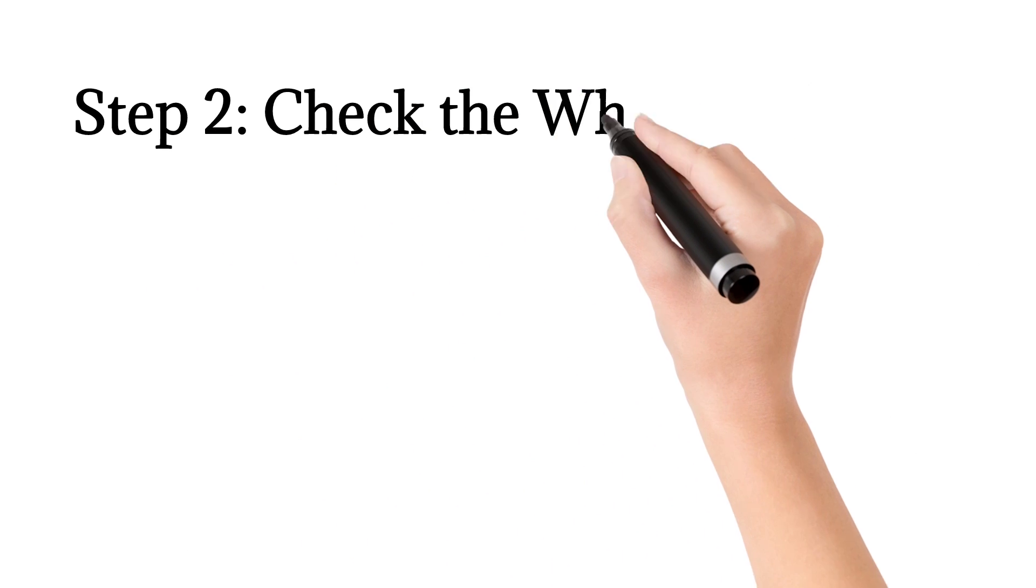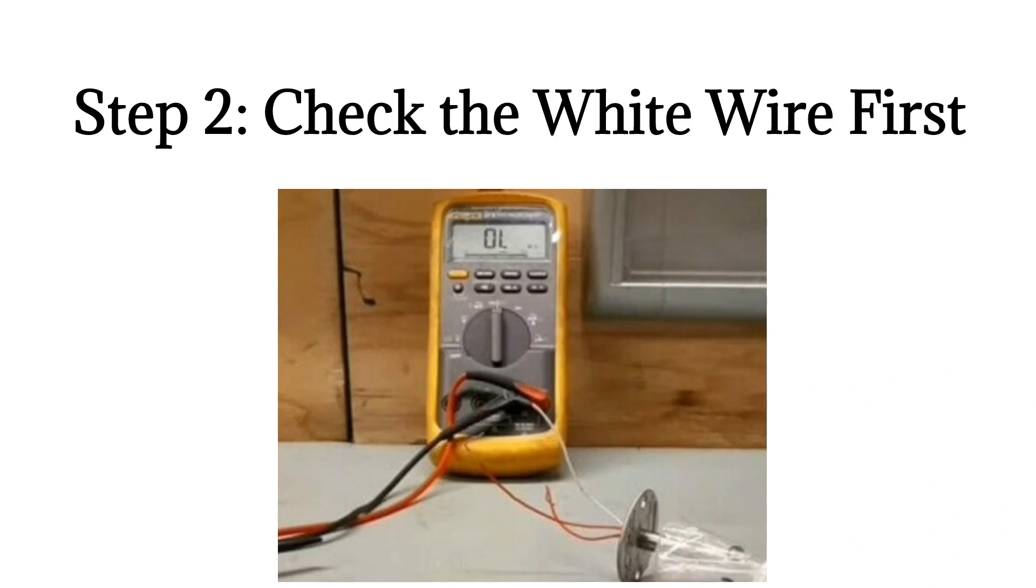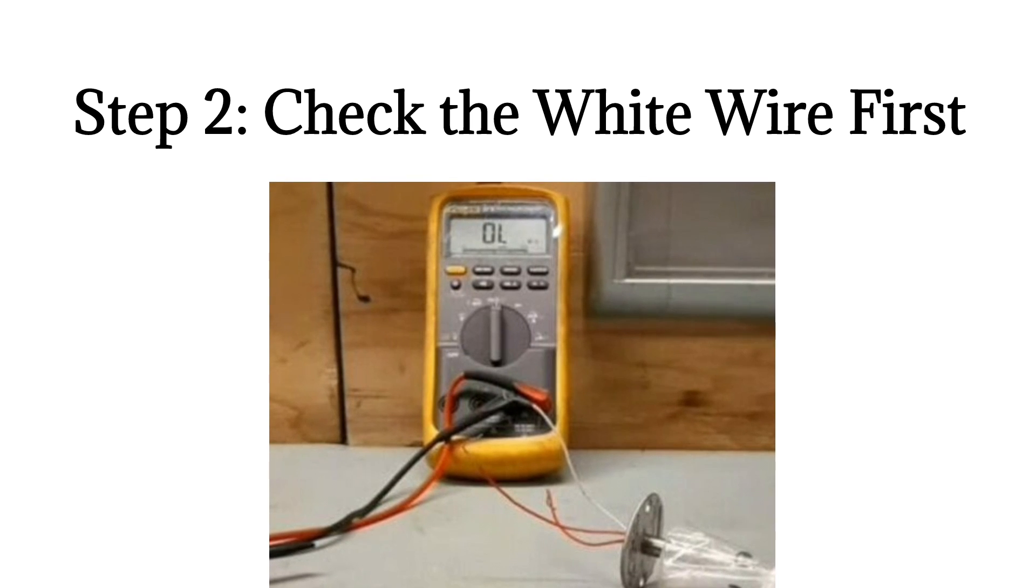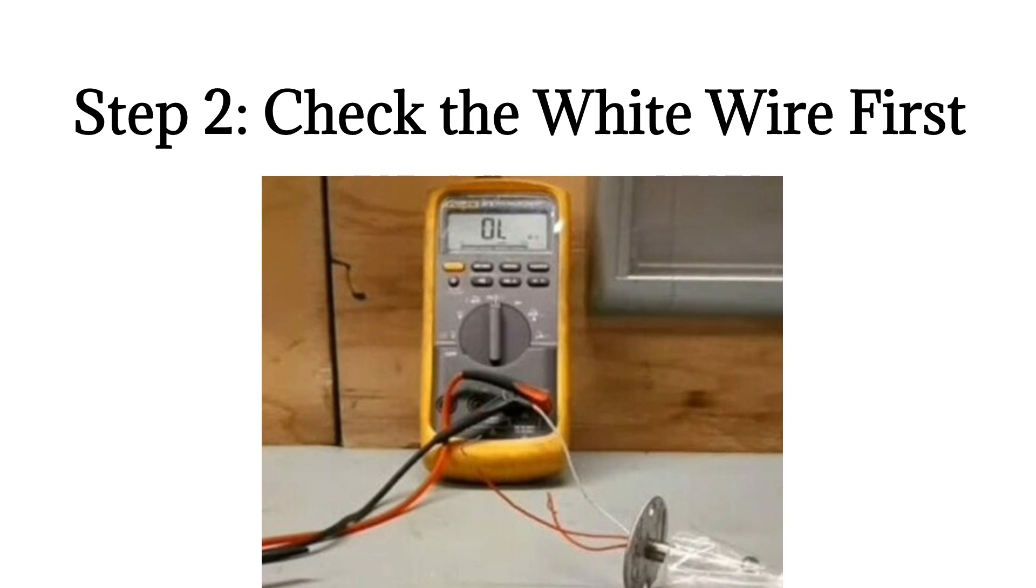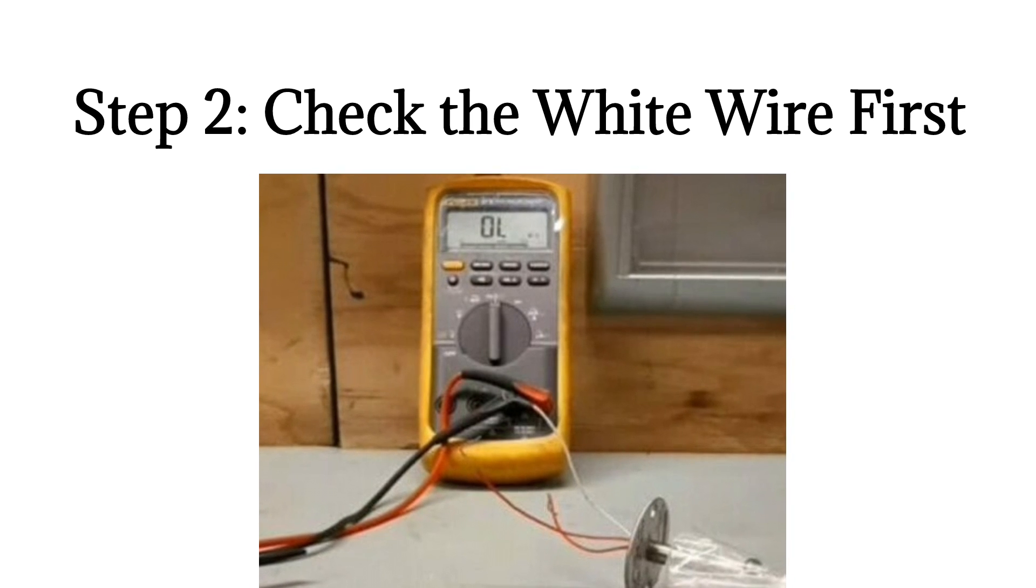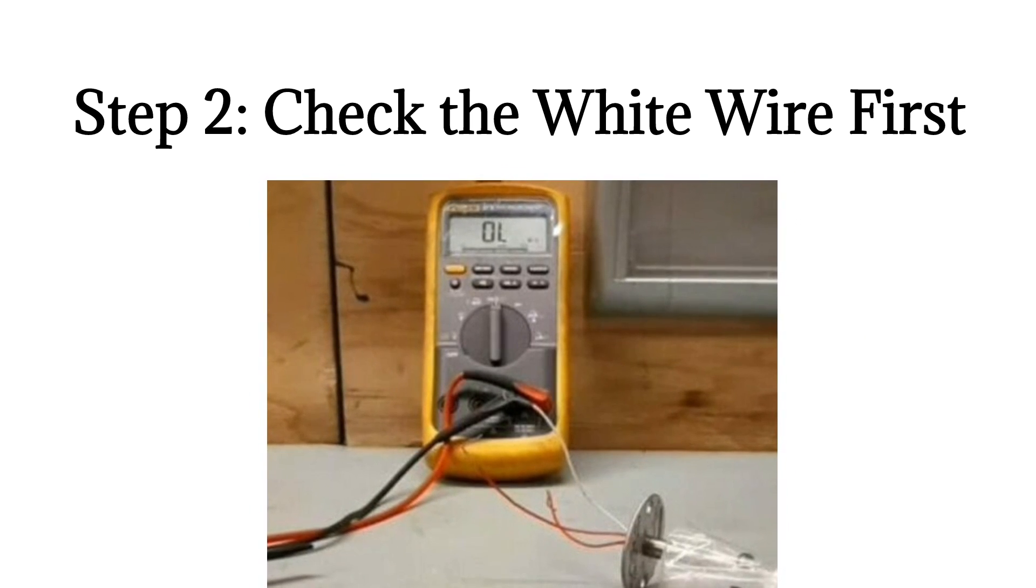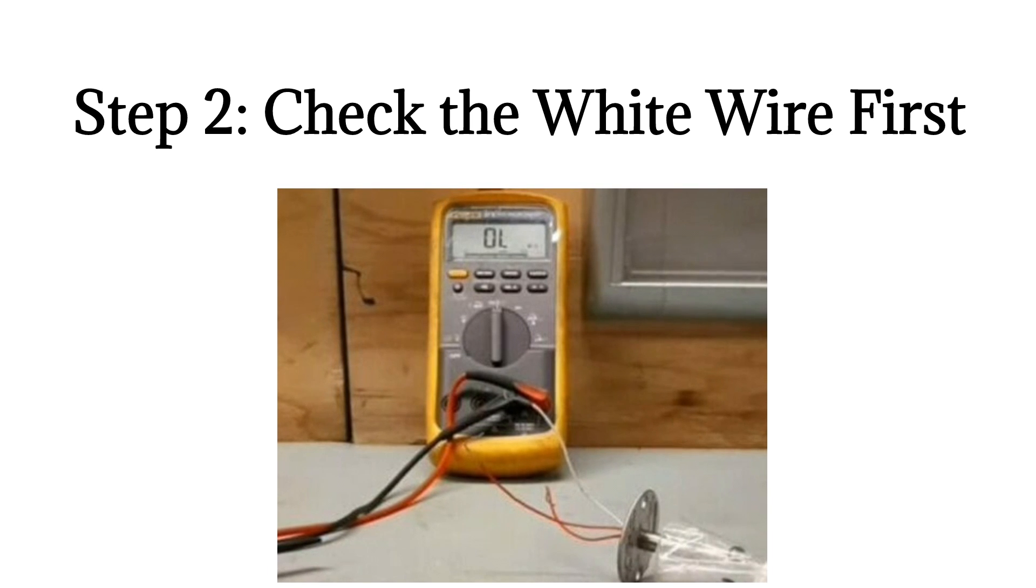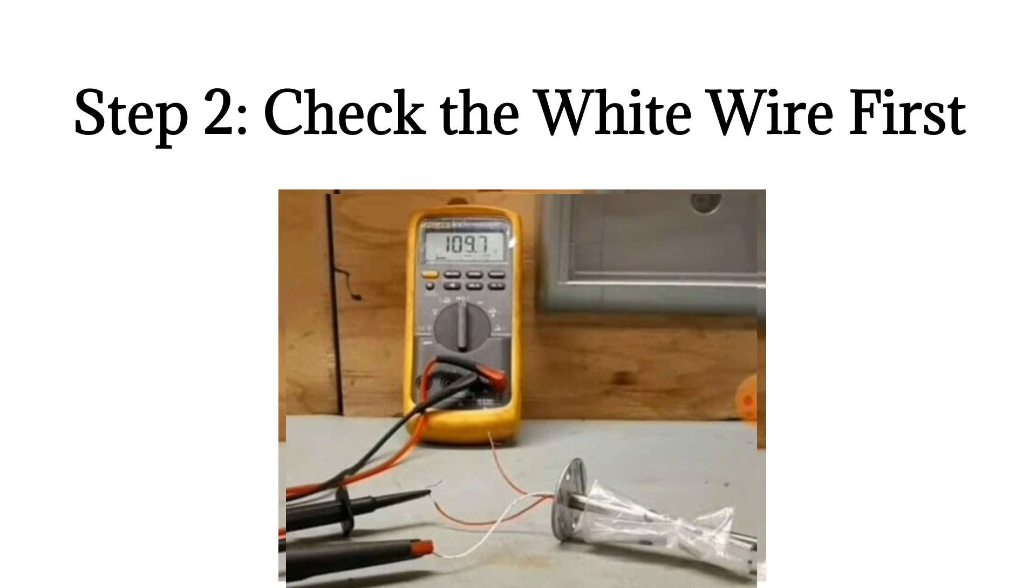Step 2. Check the white wire first. Use the multimeter to check the 3-wire RTD. Refer to the MFG for the wiring and color code. Here, see the picture below. It has been connected first to the white wire and the other probe to another wire. Take note of the reading, which is close to 110 ohms.